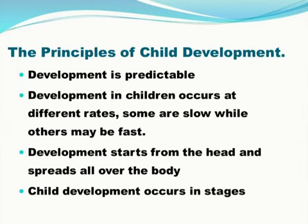The Principles of Child Development: 1. Child development is predictable. 2. Child development in children occurs at different rates — some are slow, while others may be fast. 3. Development starts from the head and spreads all over the body. 4. Child development occurs in stages.